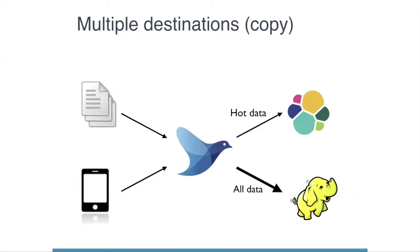Fluentd also supports multiple destinations, so you can send data to different destinations for different purposes. In this example, use Elasticsearch for a real-time dashboard, and use Hadoop HDFS for batch and archive purposes.